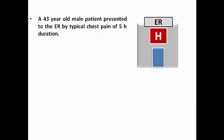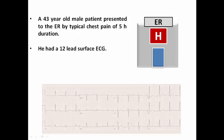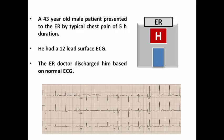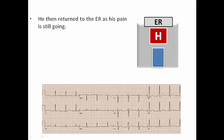A 43-year-old male patient presented to the ER with typical chest pain of 5 hours duration. He had a 12-lead ECG which was normal. The doctor who saw this patient decided to discharge him, concluding that because the ECG was normal there was nothing to worry about. However, after being discharged, the patient returned to the ER as his pain was still ongoing and getting more severe.